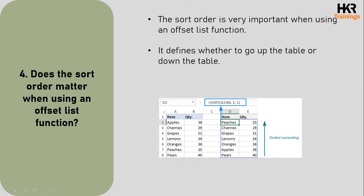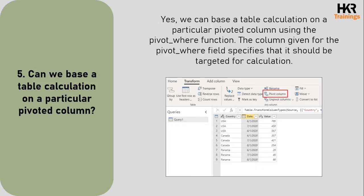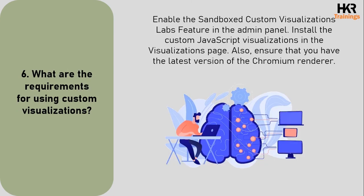The fourth question: does sort order matter when using an offset list function? Yes, sort order is very important when using an offset list function — it defines whether to go up the table or down the table. The fifth question: can we base a table calculation on a particular pivoted column? Yes, we can base a table calculation on a particular pivoted column using the pivot_where function. The column specified in the pivot_where field specifies what should be targeted for calculation.